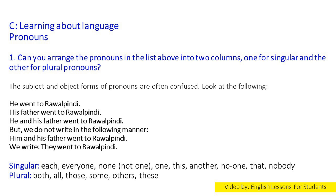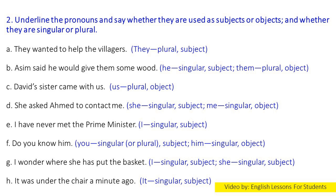Section C: Learning about language. Can you arrange the pronouns in the list on page 16 into two columns — one for singular and the other for plural pronouns? Singular: everyone, none, not one, one, this, and other, no one, that, nobody. Plural: both, all, those, some, others, these, these two.